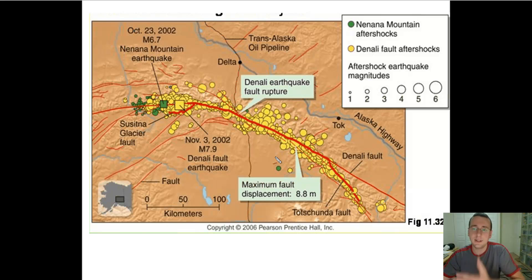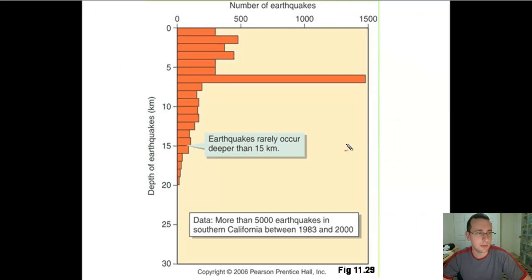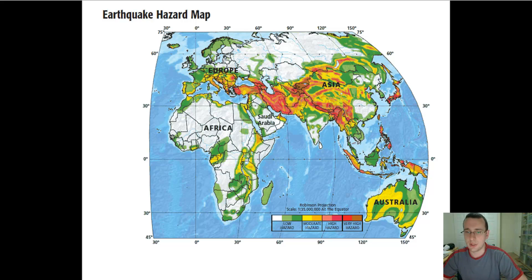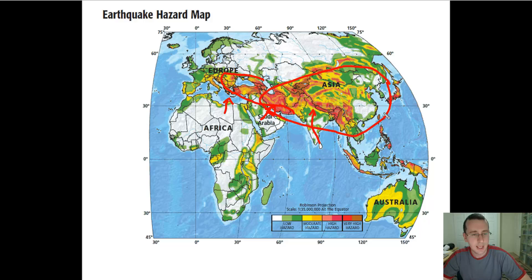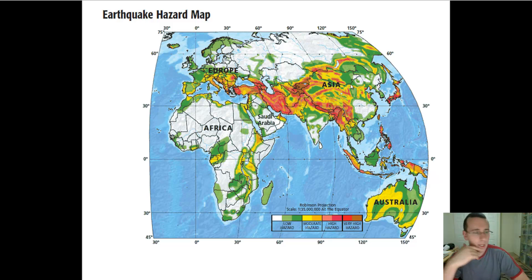By studying areas of the world that tend to have the most earthquakes, we've come up with the idea of hazard zones — areas that experience the most earthquakes. Asia is considered a very big hazard zone because of the major collision India is undergoing, and also the Arabian plate colliding with Asia, and Africa pushing against Europe. You also have other hazard zones around the Pacific Ring of Fire, because of subduction between the Pacific plates and the plates of Eurasia.